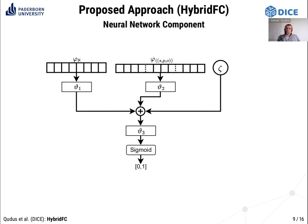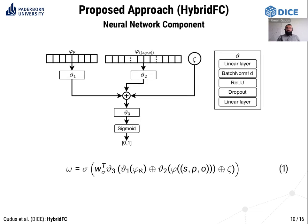The neural network component has three inputs from the previously mentioned components. The output of the text-based component, as a sentence vector, is fed into the first multilayer perceptron, theta1. The output of the KG embedding-based component, which is the concatenated SPO vector, is fed into the second multilayer perceptron, theta2. The outputs of theta1 and theta2, along with the output of the path-based component, are concatenated and fed into a third multilayer perceptron, theta3. A sigmoid function is applied at the end to produce the final validity score between 0 and 1. Each multilayer perceptron theta-i consists of five layers, as shown in the figure. The mathematical equation for the neural network component is also shown at the bottom of the slide.